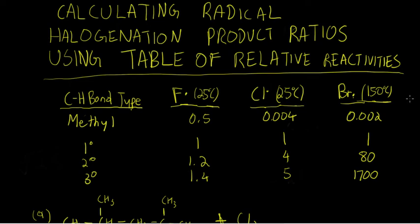In this video we're going to be working a couple more examples calculating radical halogenation product ratios using this table of relative reactivity.